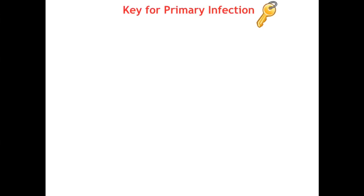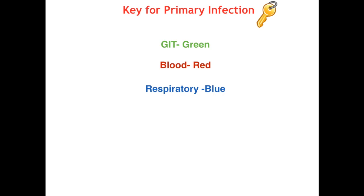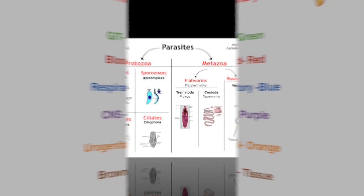For each of the parasites I'm going to be going over, I have them color coded according to their primary site of infection — meaning what symptoms do they primarily cause? Starting off: GI is green, blood is red, respiratory is blue, CNS is purple, urogenital is orange, and brown is for tissue pathogens.